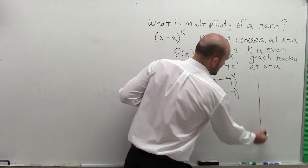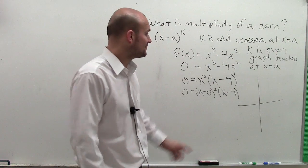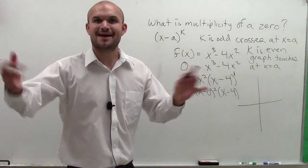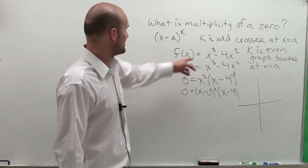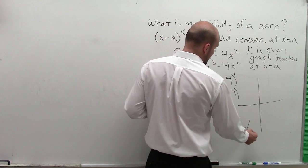Now, hopefully you've been talking about end behavior. I have other videos on that. But looking at this problem, the degree is odd with positive leading coefficient, so it falls to the left and rises to the right.